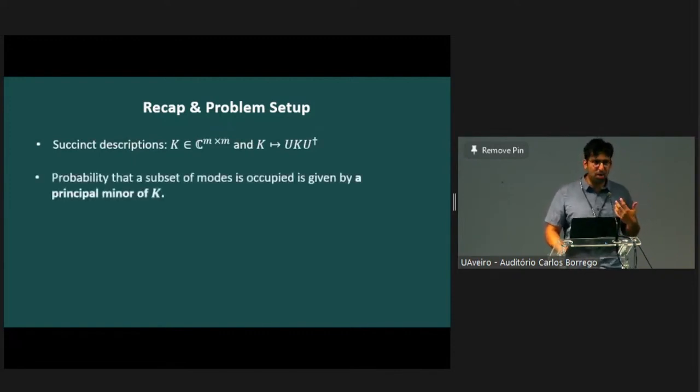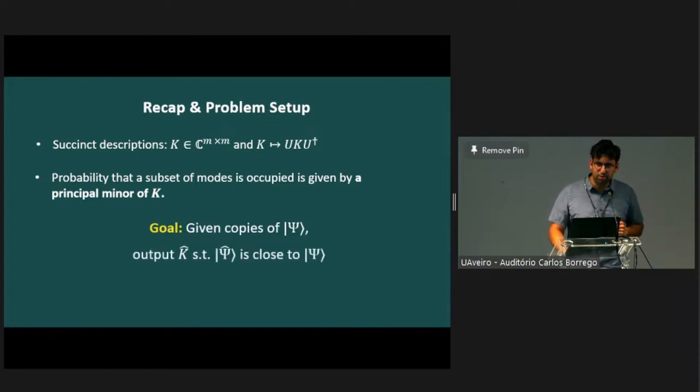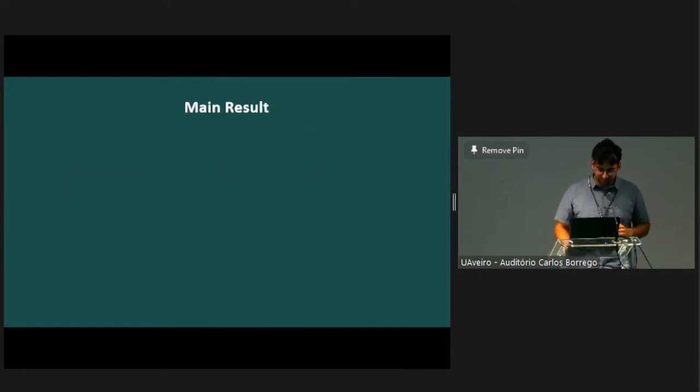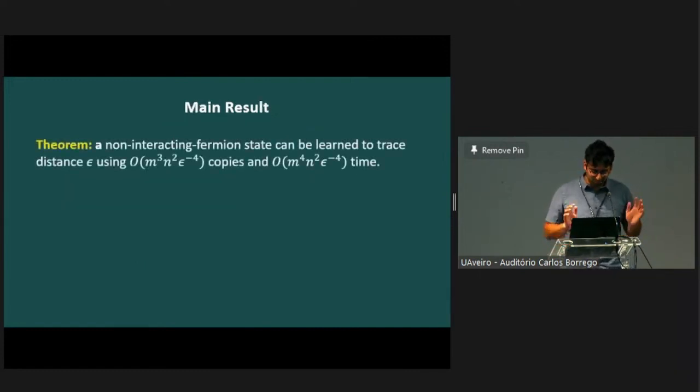At this point, I think I can take stock of what we've talked about so far and just state what our goal in this paper is. These systems of non-interacting fermions have a succinct description, and the unitary evolution is also succinct. You get measurement probabilities out of this succinct description by taking submatrices and computing determinants. What we want to do in this work is we're given copies of a non-interacting quantum state, and we want to output a matrix K hat such that the corresponding state is close to the original.